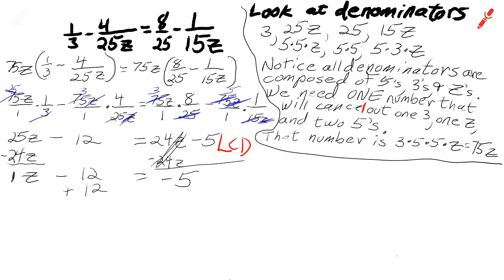Add 12 to both sides. And I'll have 1z which is 1 times z, which is z equals 7. Now check your answer. Does that answer make any of the original denominators equal zero? No it doesn't. So this is your answer and there's no problem.